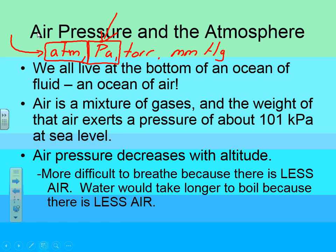At sea level, the pressure is one atmosphere, or 101,300 pascals. If you're on the ground, the entire atmosphere is weighing on you, so you have one atmosphere. If you go up, you're going to have less atmosphere on you. If you go down, you're going to have more atmosphere on you.